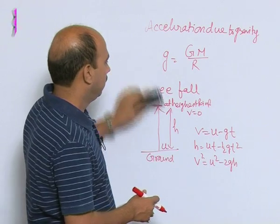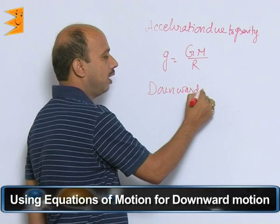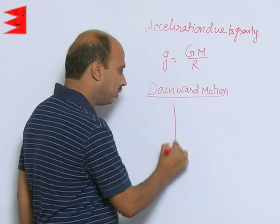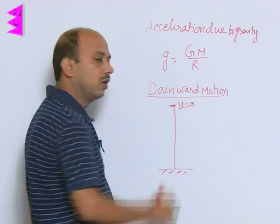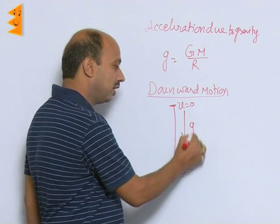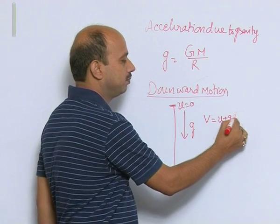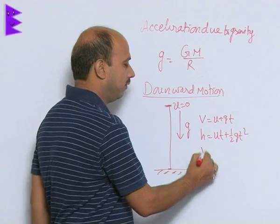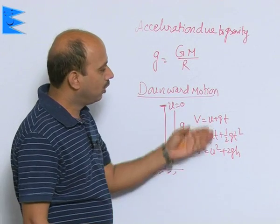For downward motion — this is about free fall — this is the highest point, this is the ground. When you drop any object from here, initial velocity is 0; when it reaches and hits the ground, it has the maximum velocity. The object is coming downward, acceleration is acting downward, so we write: v = u + gt, h = ut + ½gt², and v² = u² + 2gh. For downward motion we use all these three equations of motion.